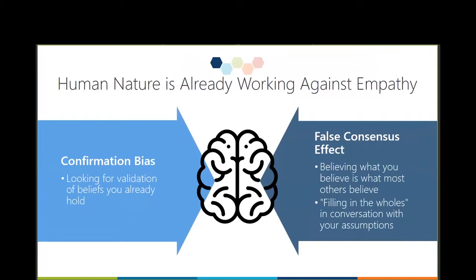By nature, when we speak with others, we're typically looking to confirm what it is that we already know. This is called confirmation bias, and it's part of our human nature. Human nature is already working against empathy. When we're focusing on confirmation, it leads us to hear and interact through a filter — also known as bias. If you think the problem is a system or a tool, you're likely to take that first response that sounds like what you already think. We'll teach you today how to use unpacking questions and the concept of storytelling to make sure that you're truly empathizing with your users and understanding the situation from their perspective.